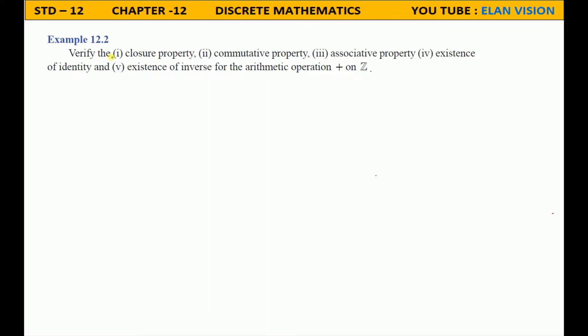Chapter 12, Example 12.2. Verify the Closure Property, Commutative Property, Associative Property, Existence of Identity, and Existence of Inverse for the arithmetic operation plus on Z.